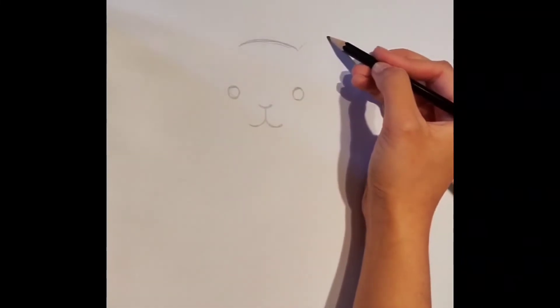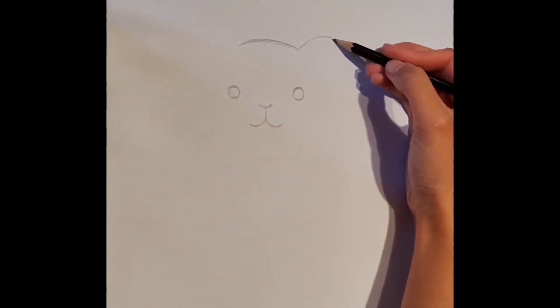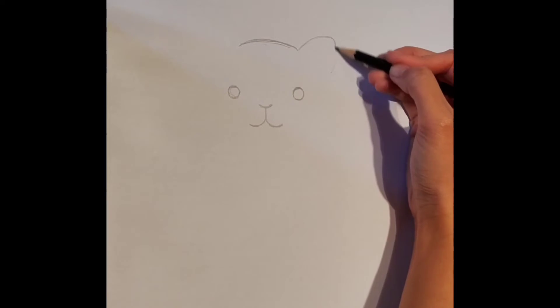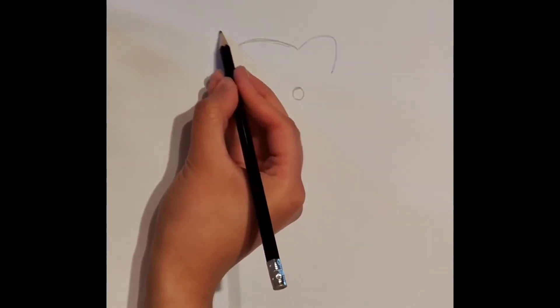Now, from each end of the curve, draw two triangular shapes which are going to be the cat's ears. Make sure these triangular shapes match the distance of the eyes, and make sure that both ears are the same size and length.